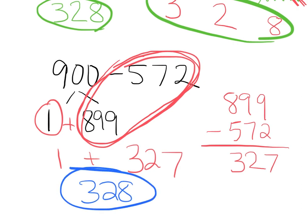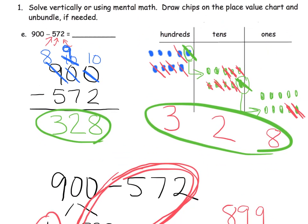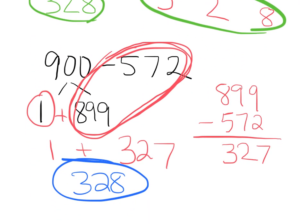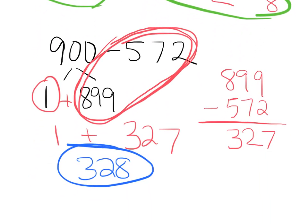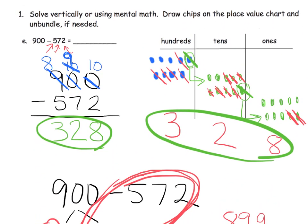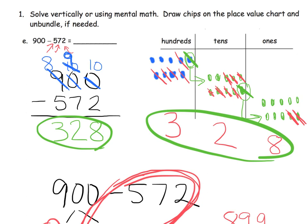We get the same answer as before without doing any unbundling or regrouping, because we used decomposition. We took 900 and broke it into 1 plus 899. After subtracting 572 from 899 we got 327, then added back the 1 we temporarily set aside, giving 328. Teachers and parents, that's just a cool backup plan to share if your students are starting to struggle with unbundling.